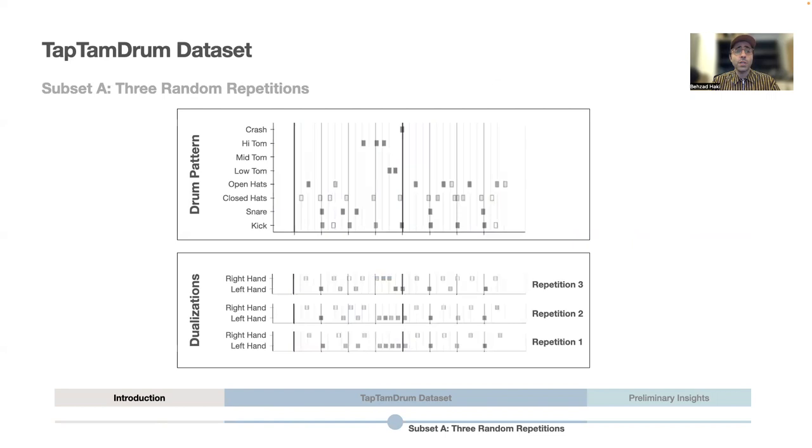In the initial sessions, we selected 24 patterns to be presented randomly three times to each of the four drummers without notifying them about the repetitions. The objective here was to establish how consistently a single drummer dualizes repeated drum patterns and how much agreement existed between the dualizations obtained from different drummers.